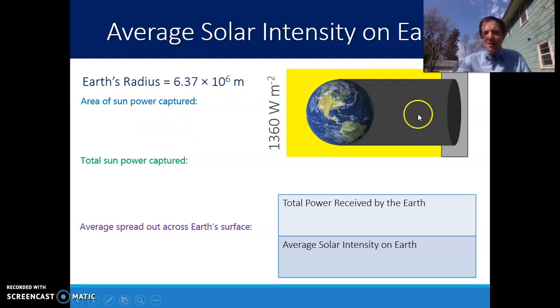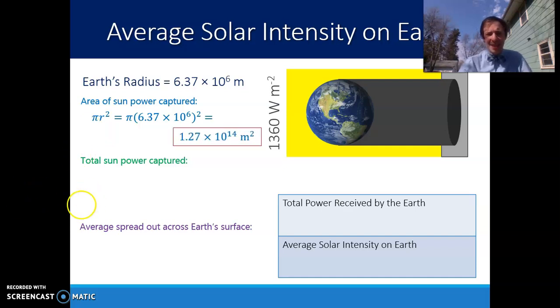Now, in order to figure out the area captured, we need to know the radius of the Earth that's provided up here. So if I wanted to find the area of this shadow, that's just going to be the area of a circle, pi r squared. Pi r squared, in this case, gives you a value of 1.27 times 10 to the 14th meter squared. And again, that is the cross-section of this shadow, basically figuring out how big, how round is that Earth in two dimensions.